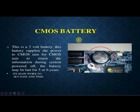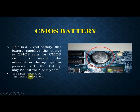CMOS battery — there is a small board battery. This battery supplies power to the CMOS RAM so it can retain information during system power-off. The battery may last 3 to 5 years. Its main function is to maintain date and time, which is always updated when we start the system.